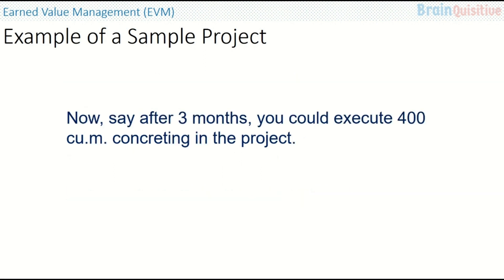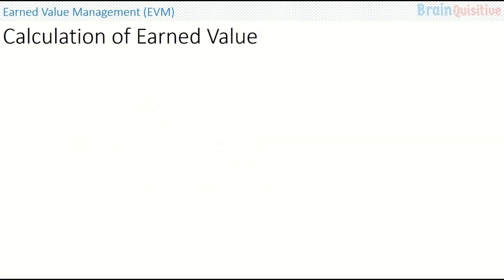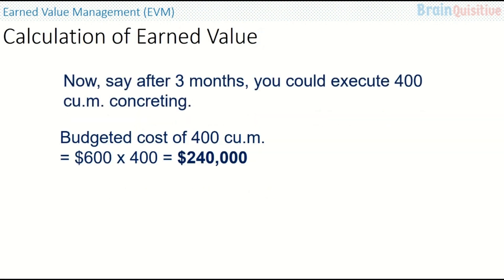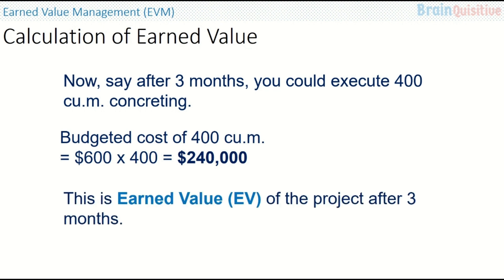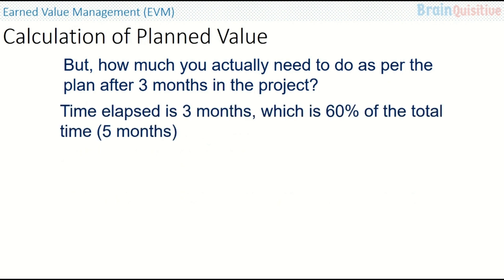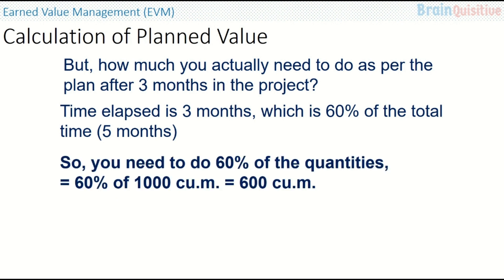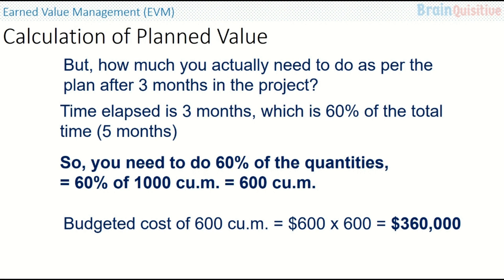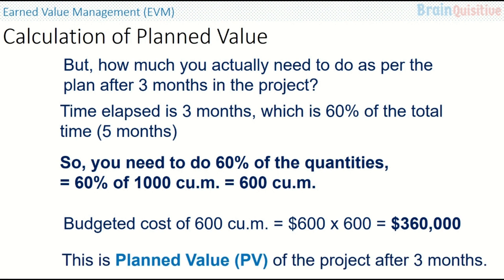After 3 months, you could execute only 400 cubic meters of concreting. So the budgeted cost of 400 cubic meters is 600 multiplied by 400, which is 240,000 dollars. This is the earned value of the project after 3 months — the quantity actually executed multiplied by the budgeted cost. As per the plan after 3 months, time elapsed is 3 months which is 60% of the total 5 months. So you need to have done 60% of quantities — 600 cubic meters — with a budgeted cost of 600 dollars multiplied by 600, that is 360,000 dollars. This is the planned value after 3 months.